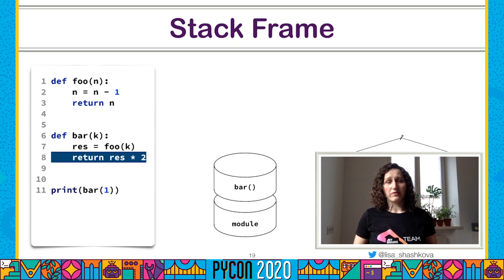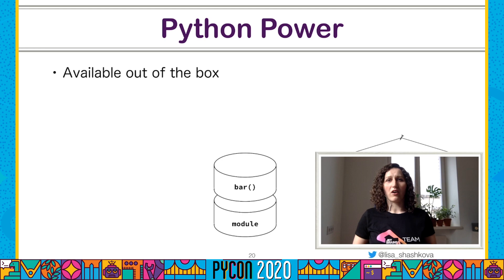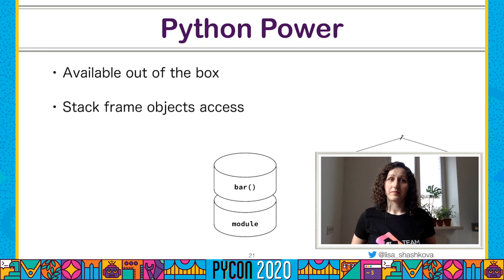Execution in the previous frame then continues. This is a rough description, but that's the main idea. In fact, this runtime machinery and the concept of a call stack are the same for many other programming languages. But the major difference is that not many languages expose this runtime information out of the box. In Python, frame objects can be accessed as usual Python objects right in your program, and you can retrieve a lot of interesting information from them.